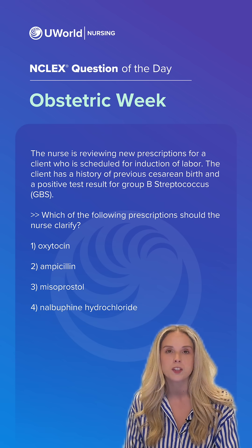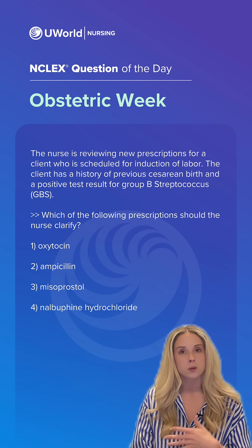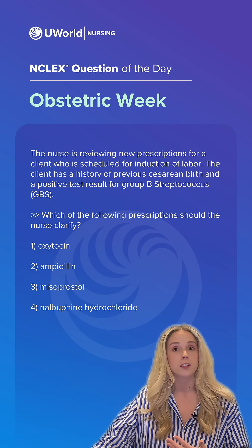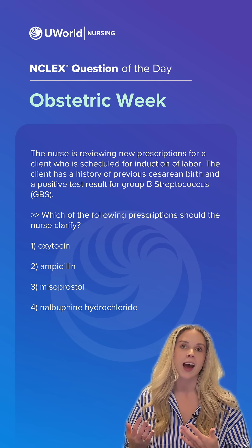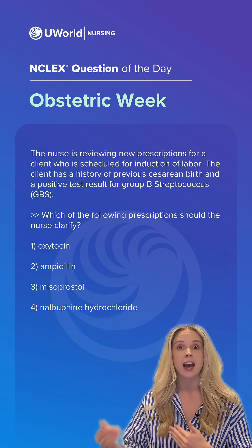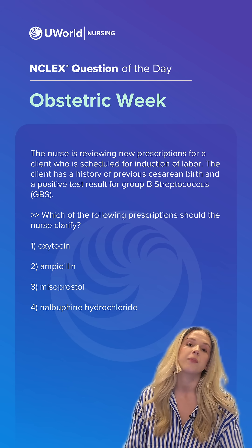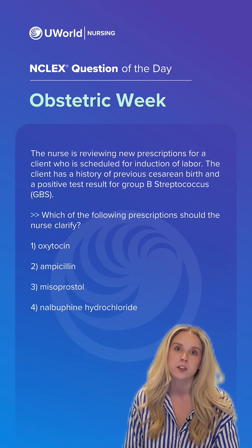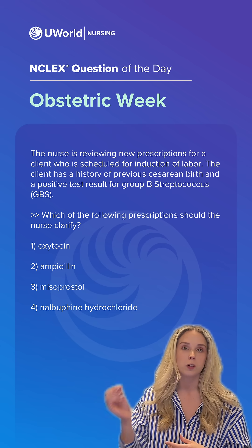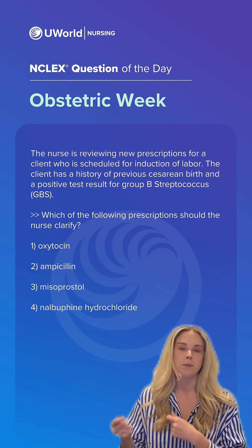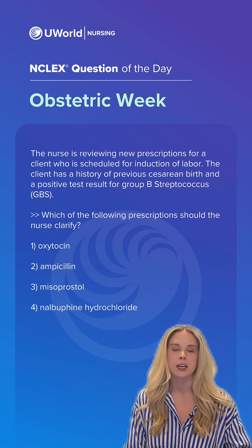Options one, two, and four are safe to give. Oxytocin is also a drug used for induction of labor, but because we can give it IV, it can be titrated. So we're still able to give it in a previous C-section client, whereas with misoprostol, once we give it — it's in pill form — we can't take it back or titrate it.